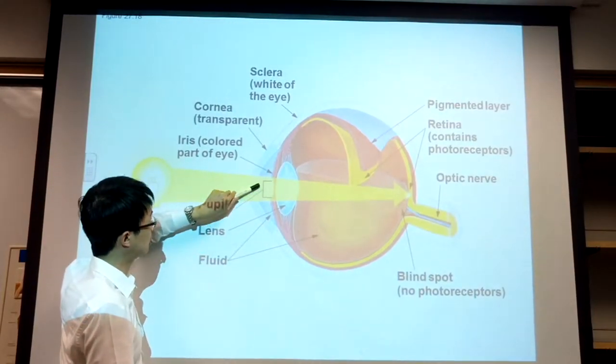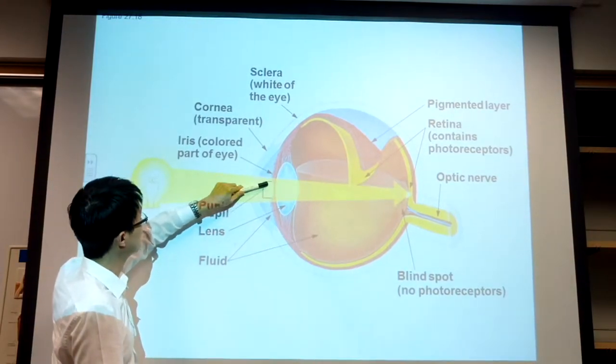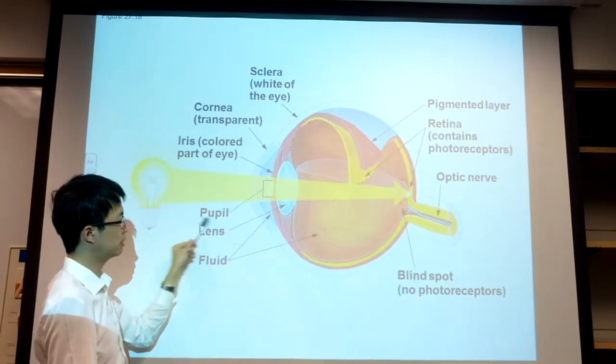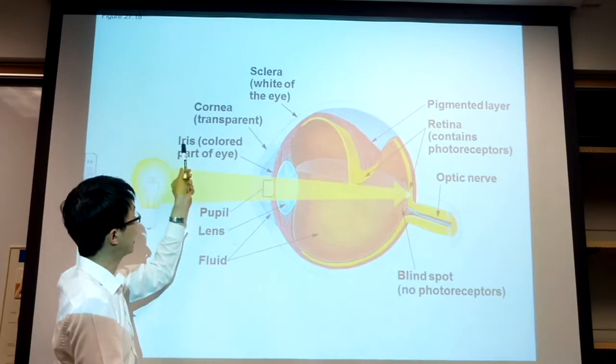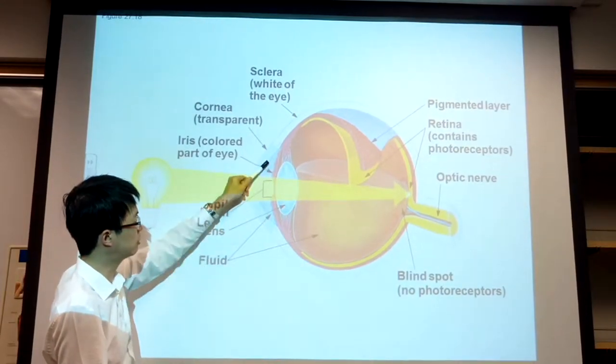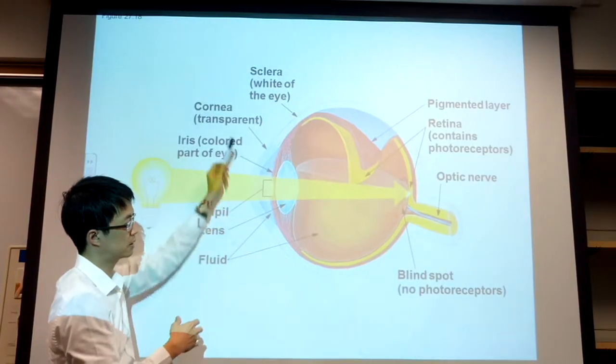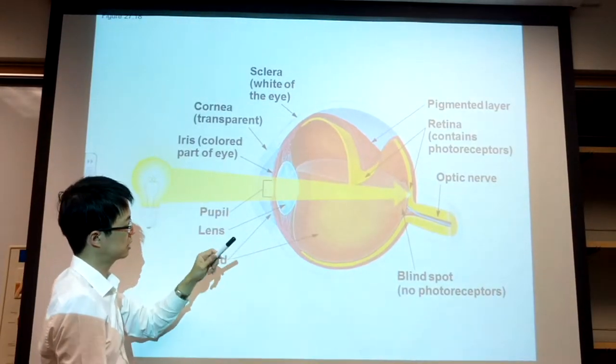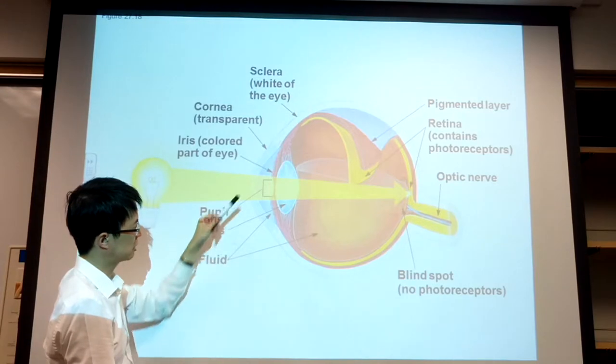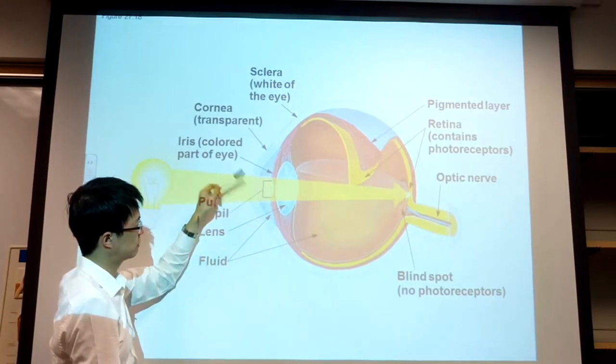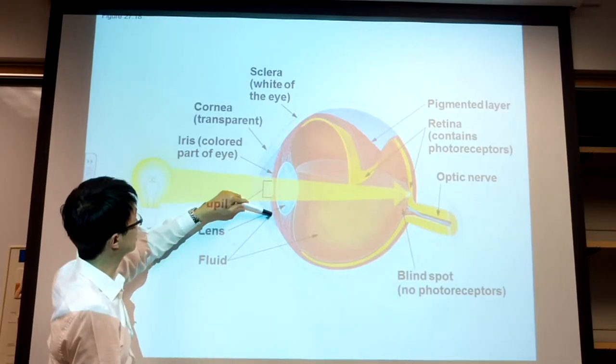After it hits the cornea, light goes through an opening here—the opening we call the pupil. The pupil is made by the iris. The iris are the smooth muscles that form the circular opening of the pupil. Remember, this is a parasagittal section.